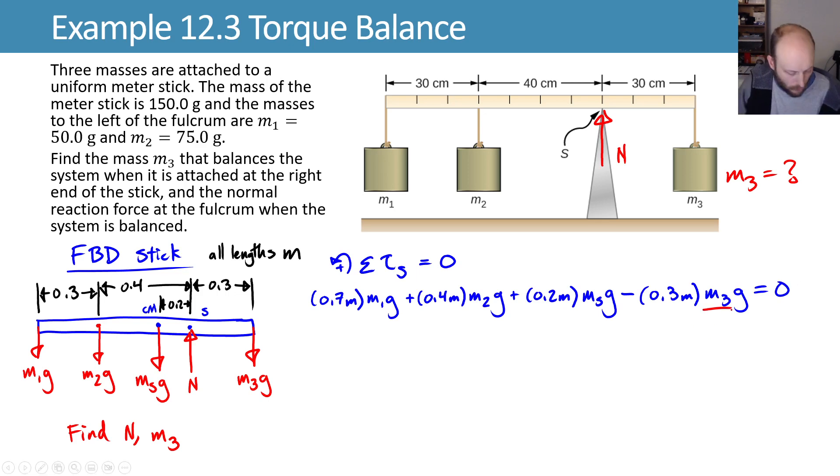This is one equation with one unknown in it. We can solve this for the unknown. It seems like I can divide everything by gravity. And now we can move the M3 times 0.3 to the other side and divide by the 0.3, leaving us with an equation that is M3 is equal to 0.7 M1 plus 0.4 M2 plus 0.2 MS divided by 0.3. And we're good. That's what it is. The meters canceled, and we're left with the mass. If I plug these all in grams, I can get my mass 3 in grams. That says my mass 3 is equal to 317 grams. That's one of the things we were trying to find.